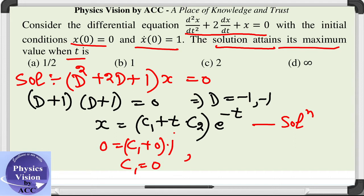The next condition is dx/dt at t = 0 equals 1. What is dx/dt? Since c₁ = 0, we have c₂ times the derivative of te^(-t), which is te^(-t)(-1) + (1)e^(-t).